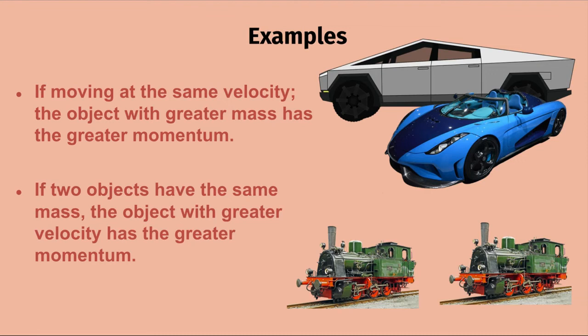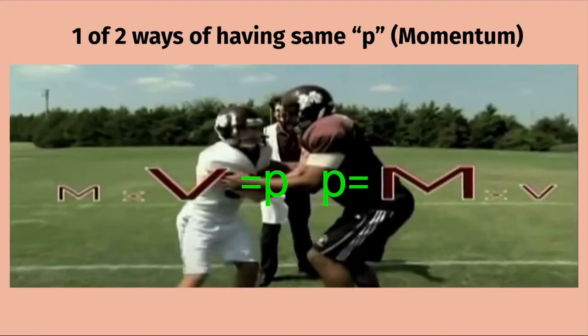If two objects have the same mass, the one with greater velocity has greater momentum — for example, two identical trains moving at different speeds. And as we saw earlier, there are two ways to have equal momentum: an object with less mass can make up for it with greater velocity to match the momentum of an object with more mass and less velocity.